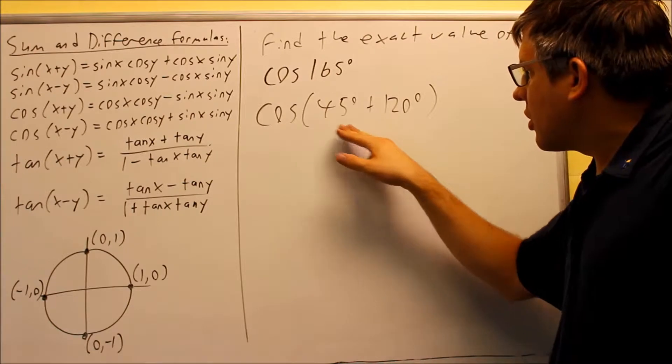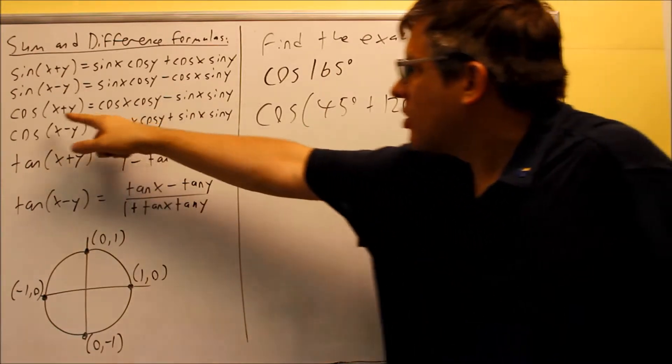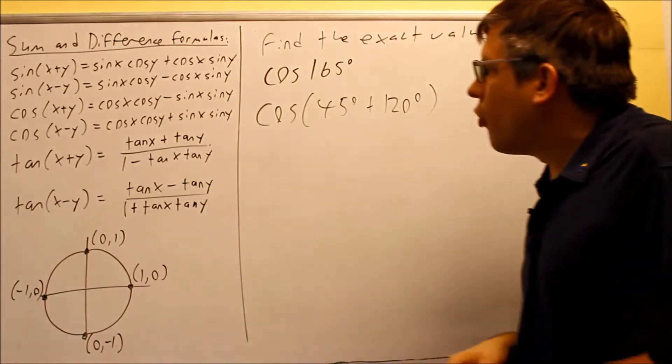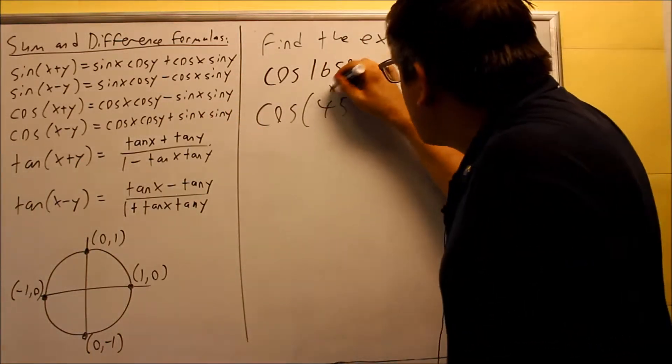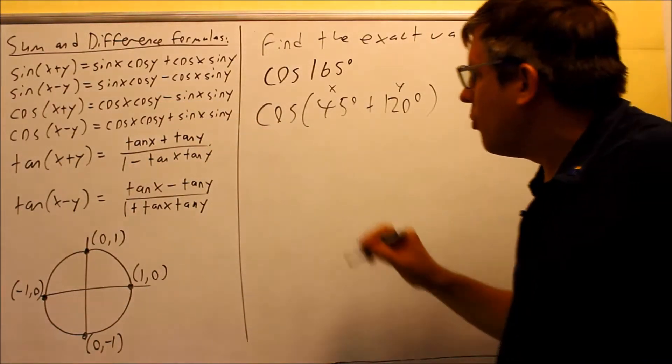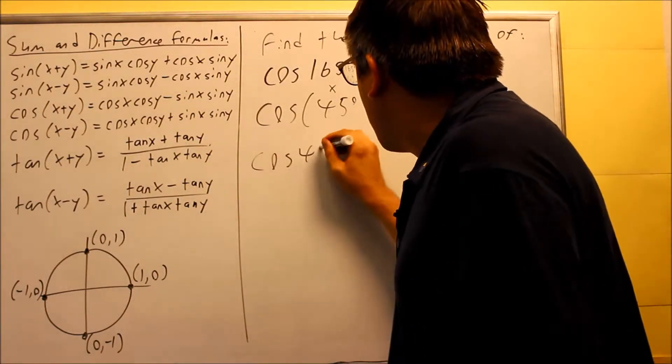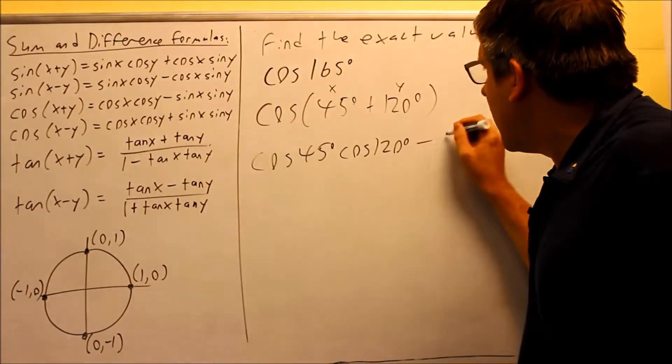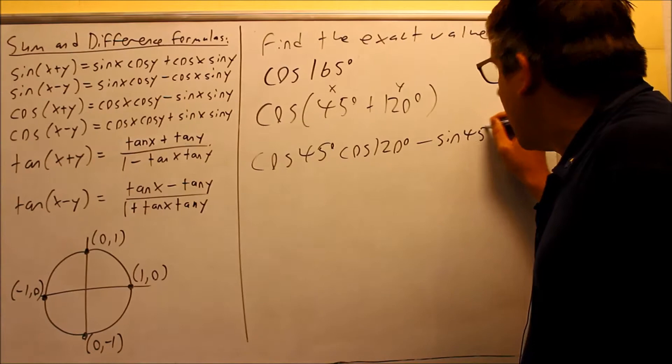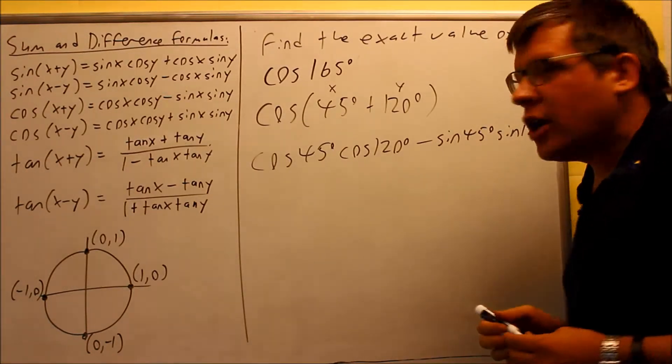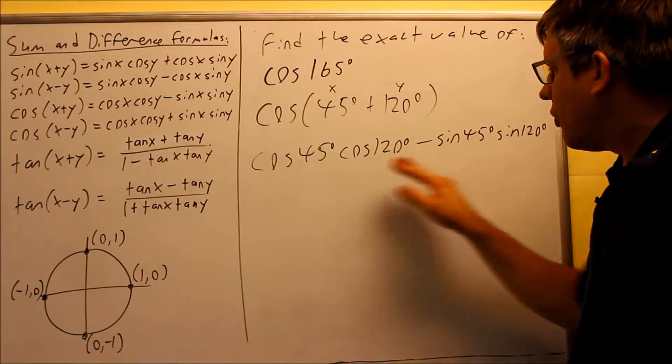We've broken it up into this, a cosine with a sum. That's this one right here. So we're going to change it into the third formula. The first value is x, the second value is y, and we're going to apply it to that third formula. We get cosine 45 and then cosine 120, then minus sine 45 and sine 120. So that's going to be taking that and rewriting it in terms of these angles.